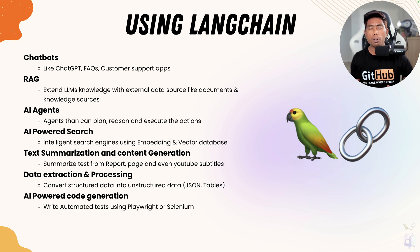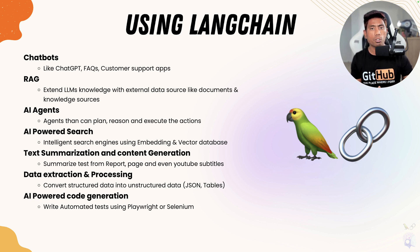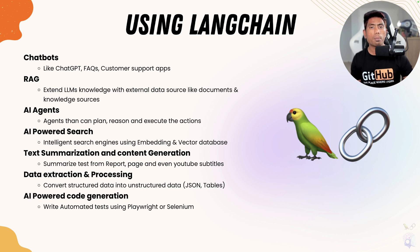We'll also be talking about how we can use LangChain for automated browser extensions like Playwright, where we can grab information and fuse it with our RAG system to retrieve data from vector stores — much like how an agent actually works. We'll also be fusing the AI agent to perform all these operations, so this course is going to be quite amazing.